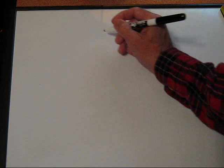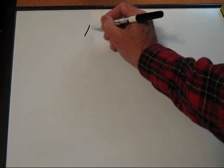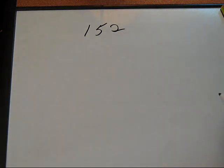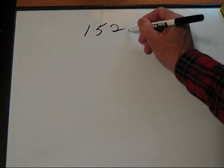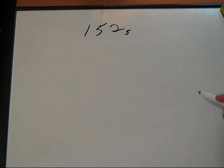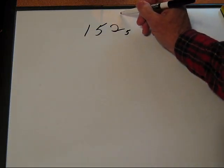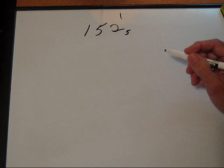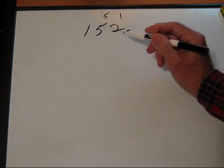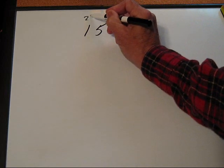Now, let's think about base-5. Let's take a look at this number again, 152. Now, in base-5, sometimes we write a little 5 down below it to remind us that we're in base-5. This is the ones column. This is the fives column. This is the twenty-fives column.